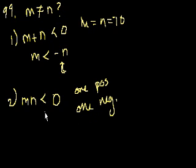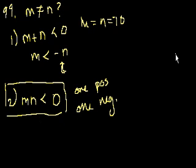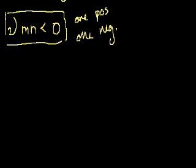And it doesn't say equal 0, so they both can equal 0. So when you multiply two numbers and you get a negative number, they have to be different numbers. Because one has to be positive and one has to be negative. The only way to get a negative as a product of two numbers is 1 positive and 1 negative. So this is all we need to know, to know that m and n are different.